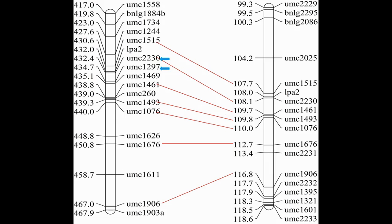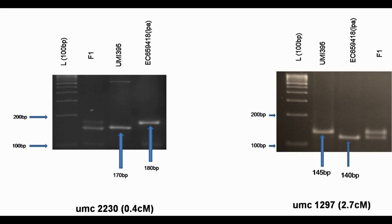Genotyping of the F1s was attempted for the identification of the true hybrid. 30 SSR markers of the LPA2 region were obtained from the MaizeGDB database. Those markers are distributed in the 1.05 bin location in the short arm of the maize chromosome. Out of 30 SSR markers screened in the LPA2 region, four markers were found to be polymorphic for UMI 395 and LPA. Hence the marker UMC 2230, which is closely linked to the LPA locus, was used as a foreground marker for screening in the F1s and backcross progenies.